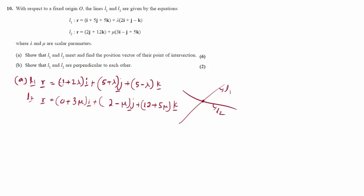L1 is 1 plus 2 lambda I. If I remove the bracket and multiply with lambda it becomes I plus 2 lambda I, and taking I common it becomes 1 plus 2 lambda. Then 5J plus lambda J — taking J common gives 5 plus lambda. Then 5K minus lambda K — taking K common gives 5 minus lambda.